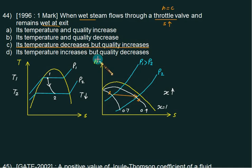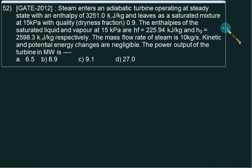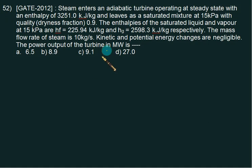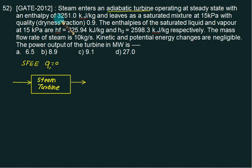In this question, we are given that steam enters an adiabatic turbine operating at steady state. Adiabatic means heat transfer Q is 0. For a turbine, we can apply the steady flow energy equation. Since it's adiabatic, we can write Q equals 0. This time we are given a turbine with inlet and exit.